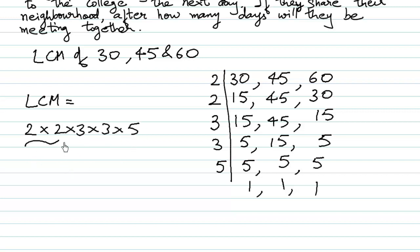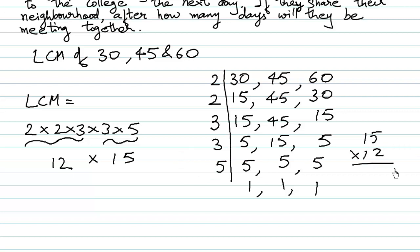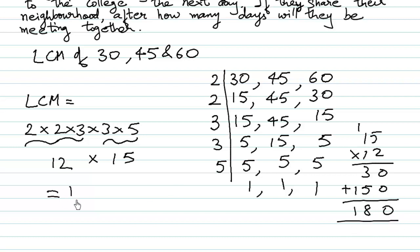Since we have 1 in the last line, the LCM is the product of all these divisors: 2 × 2 × 3 × 3 × 5. So 2 times 2 is 4, 4 times 3 is 12, and 12 times 15 gives us 180. So all three of them will be meeting after 180 days.